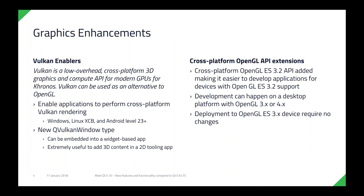The graphics enhancements — the Vulkan enablers is one of the key APIs. It allows you to have multiple different screens, hypervisors, virtual machines, and manage those through one Qt app. We can do cross-platform rendering on Vulkan, so when we have this Vulkan interface you can build the application for Windows, Linux, and Android. We have a new QVulkan type available for developers that allows you to embed it into widget-based apps as well — so it's not only for QML apps.